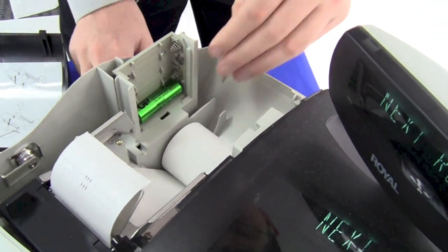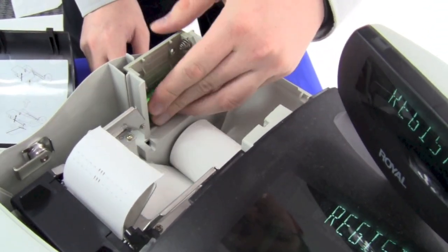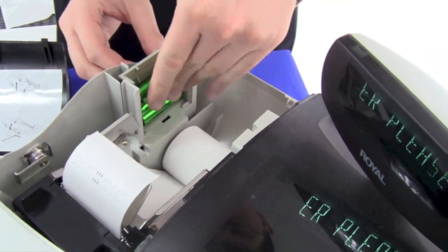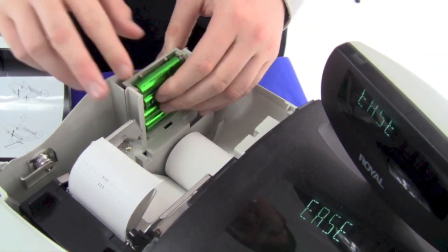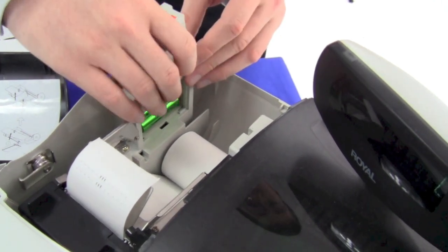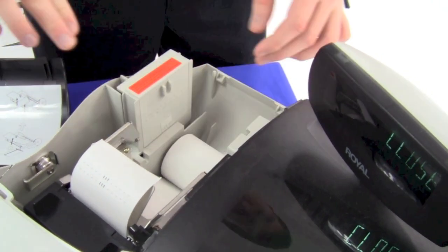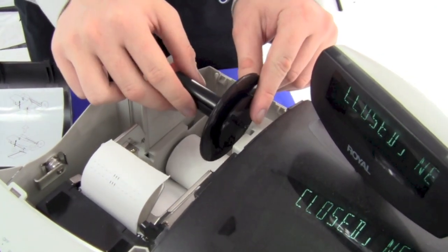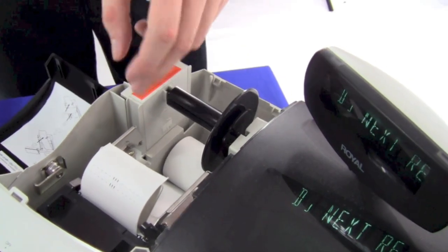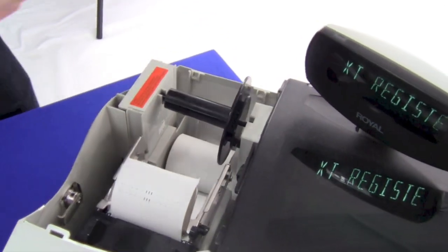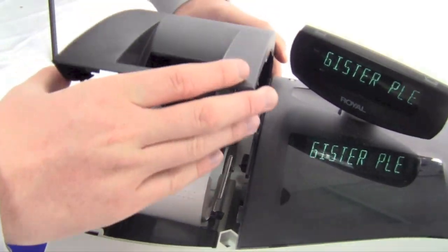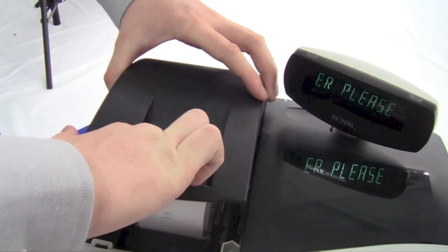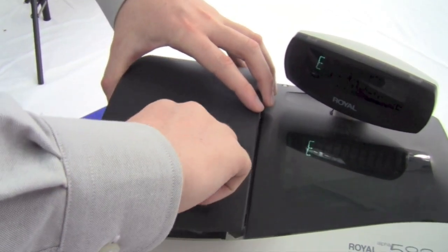Install the backup batteries which save the machine settings in case of power failure. Now the machine is ready for use. Simply replace the compartment cover and make sure that the paper will feed properly.